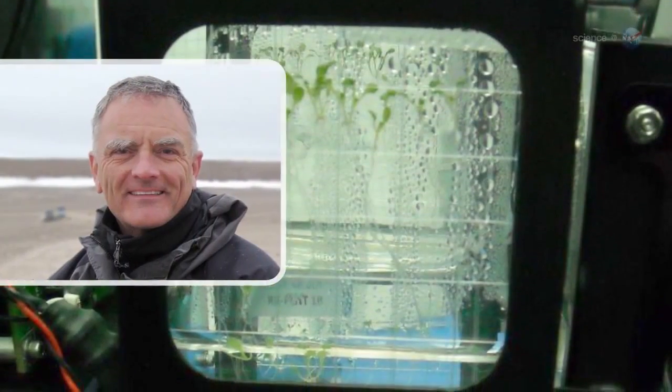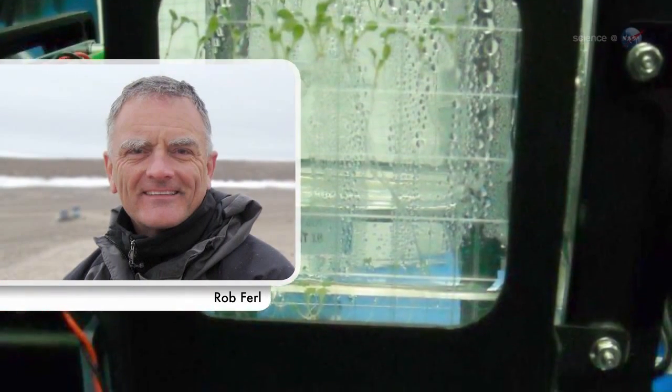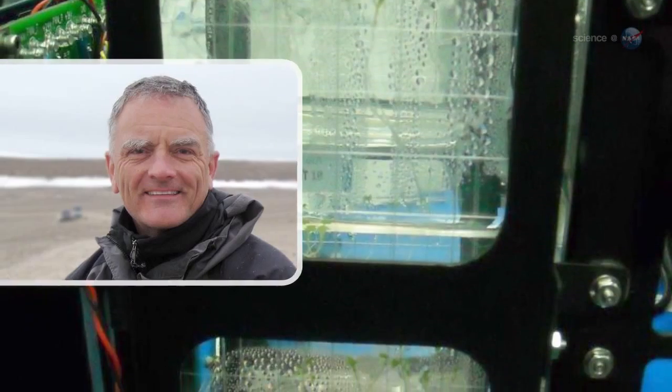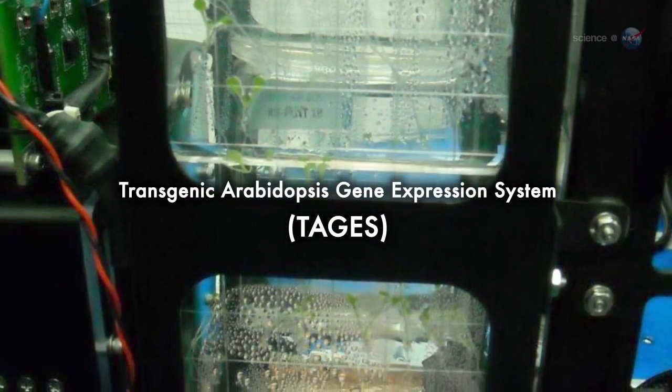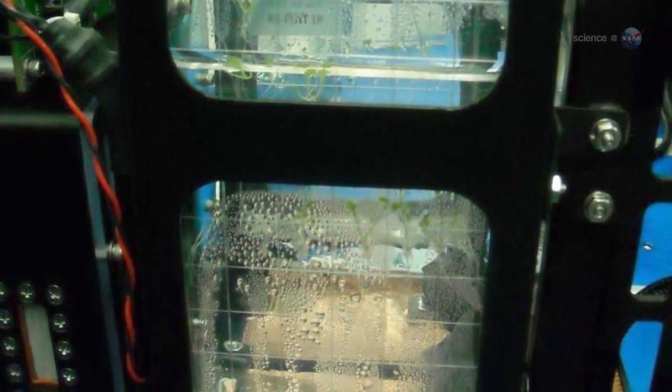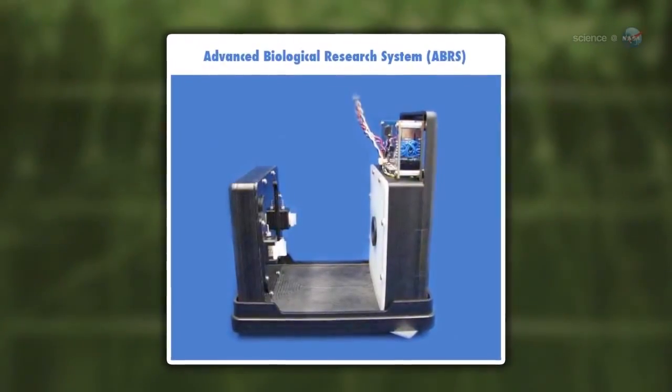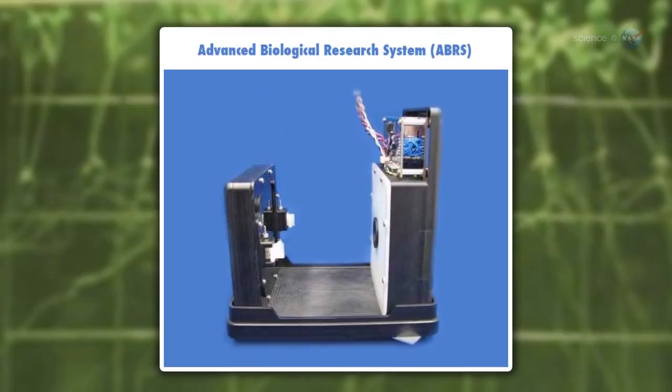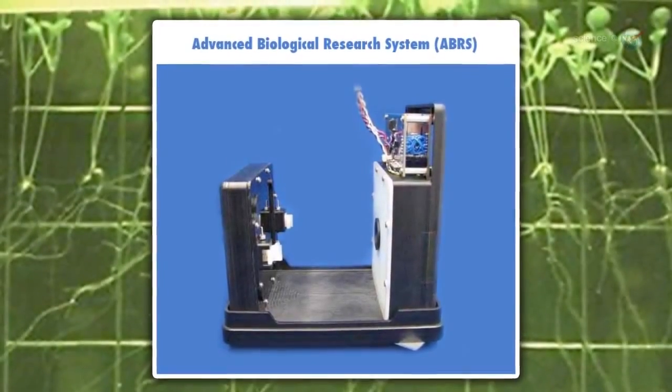Paul and colleague Rob Furl are principal investigators of an experiment on the ISS called TAGES, the Transgenic Arabidopsis Gene Expression System. For the past two years, they have been using an experimental growth chamber on board the space station to grow a garden of Arabidopsis thaliana, also known as Thalcress.